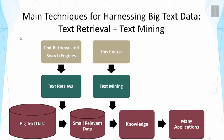Finally, I want to remind you of the big picture for harnessing big text data shown at the very beginning of the semester. To build a big text data application system we need two kinds of techniques: text retrieval and text mining. Text retrieval converts big text data into a small amount of most relevant data for a particular problem, and helps provide knowledge provenance. Text mining further analyzes the relevant data to discover knowledge useful for decision making. There is a companion course called Text Retrieval and Search Engines — taking both courses gives you a complete set of practical skills.